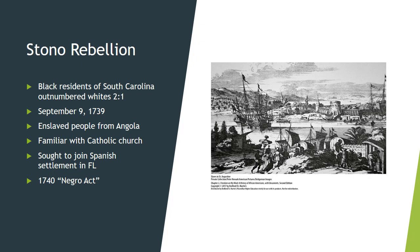The Stono Rebellion was likely inspired by several factors. A malaria epidemic had ravaged Charleston, weakening the white population, and political tensions between Britain and Spain were at their height. The rebels were hoping to march to Fort Mose on the outskirts of St. Augustine in what is today Florida, and take up residence with the Spanish.